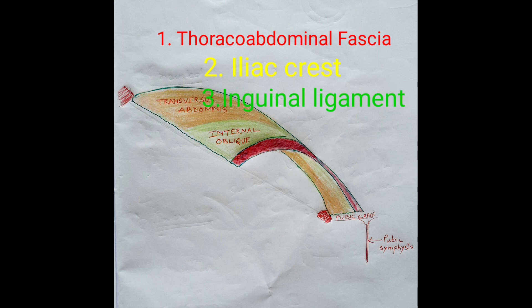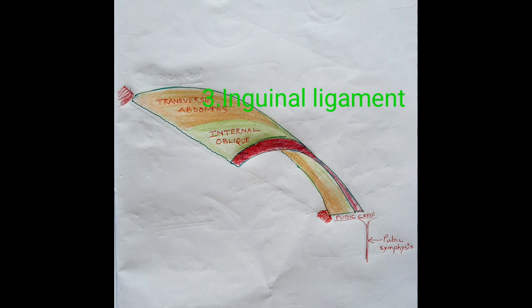Only the fibers that arise from the inguinal ligament form the conjoint tendon.